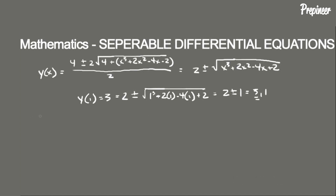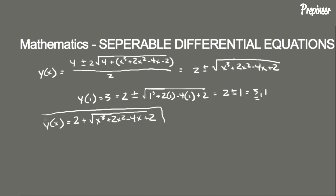The explicit solution is y(x) equal to 2 plus the square root of (x cubed plus 2x squared minus 4x plus 2). That's our explicit solution, and that's how we determine which of the two solutions — plus or minus — is correct when we have to use the quadratic formula.